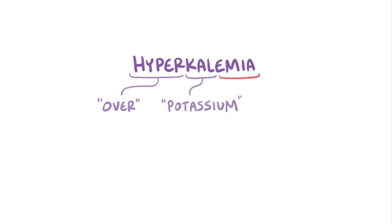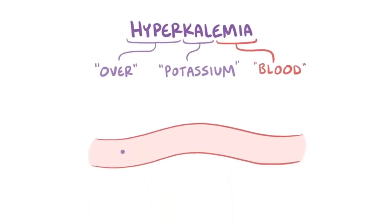With hyperkalemia, hyper means over, kal refers to potassium, and emia refers to the blood, so hyperkalemia means higher than normal potassium levels in the blood, generally over 5.5 milliequivalents per liter.